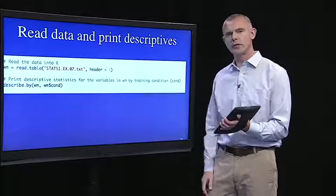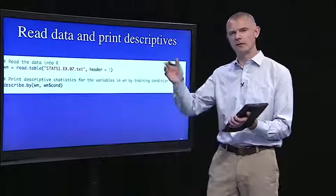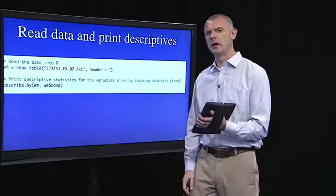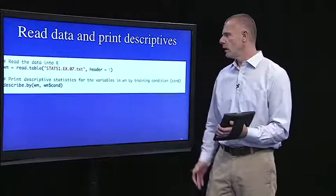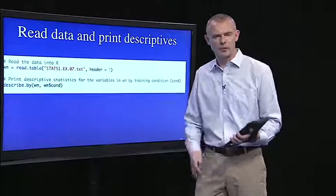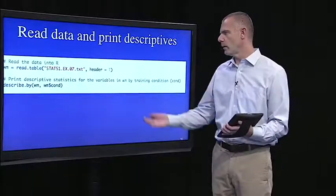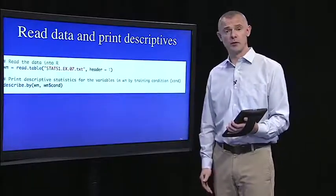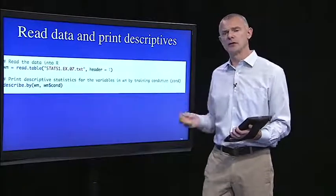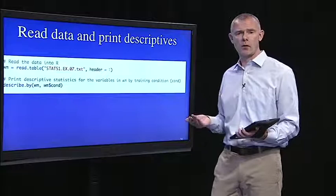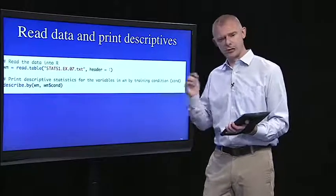I did the usual thing at the top here. I'm actually skipping some of the stuff. You've done enough scripts that I'm not writing out everything. We read the data in and we print descriptives. This is a typical first step. So I read the data into a data frame called WM, and then I used the describe by function to get descriptive statistics for all the variables by condition.